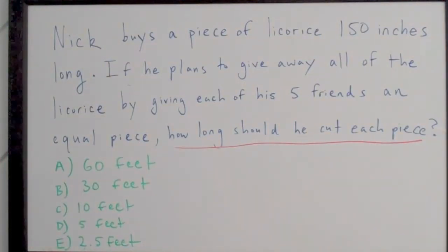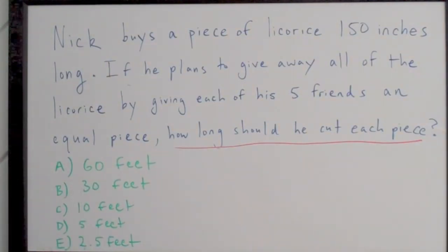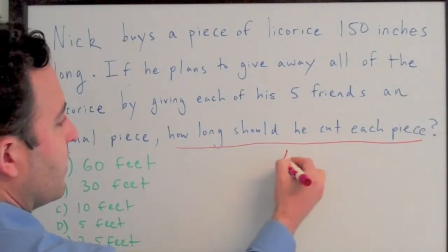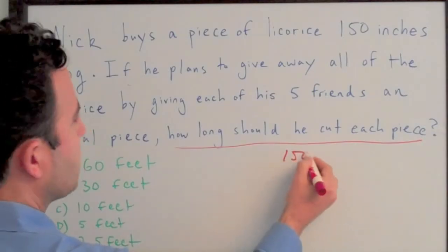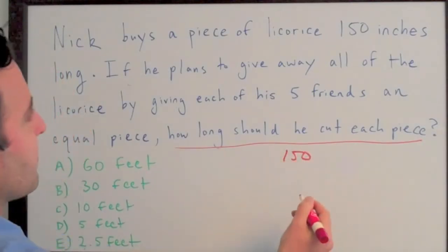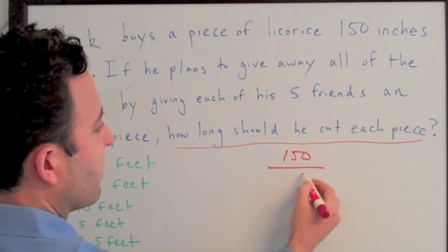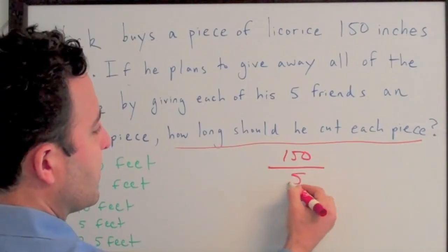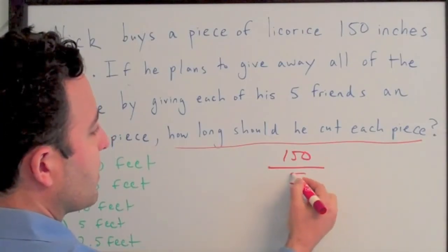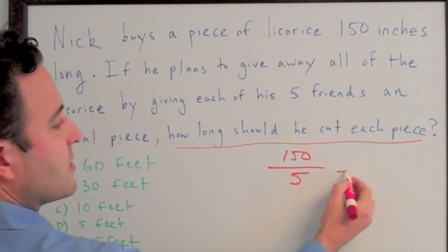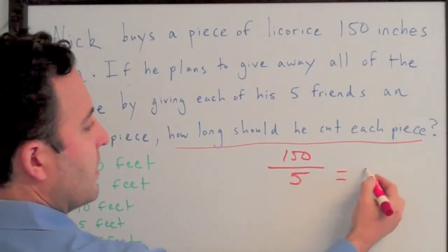So the math is really easy with this problem. We're simply going to take 150, which is the total length of the piece of licorice, and divide it by the five friends that he shares it with. That is going to give us 30.